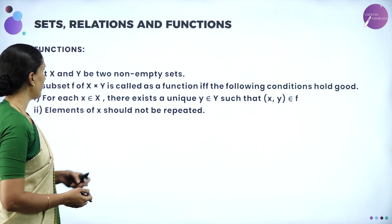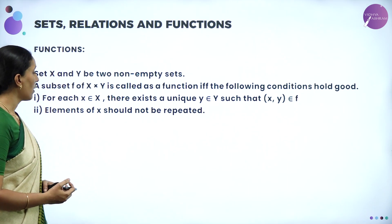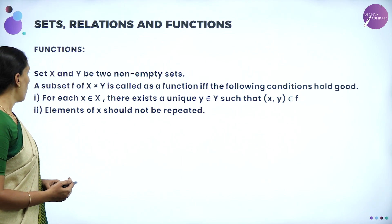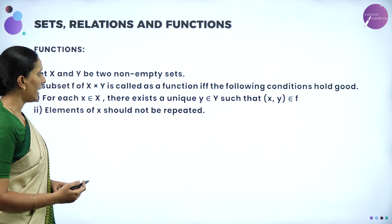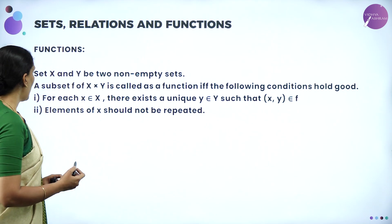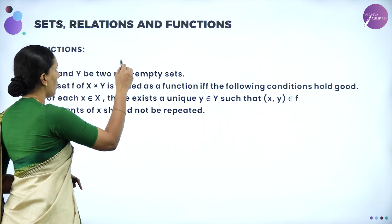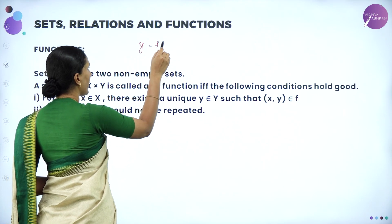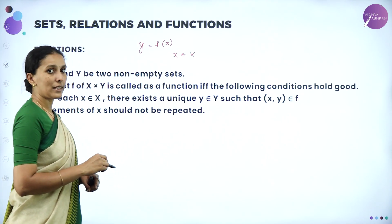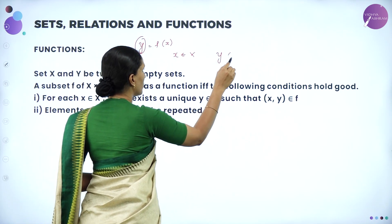Let us see the definition of a function. Let X and Y be two non-empty sets. A subset of X cross Y is called a function if and only if the following condition holds: for each x belonging to X, there exists a unique y belonging to Y such that (x, y) belongs to F, and elements of X should not be repeated. We always write any function in the form y = f(x), meaning x belongs to set X.